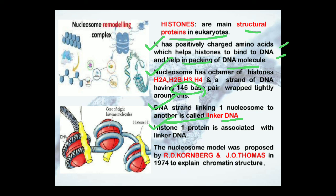The DNA strand linking one nucleosome to another is called linker DNA. Histone H1 is associated with the linker DNA. The nucleosome model was proposed by R. D. Kornberg and J. O. Thomas in 1974 to explain the chromatin structure. Here you can see the diagram of the nucleosome remodeling complex.